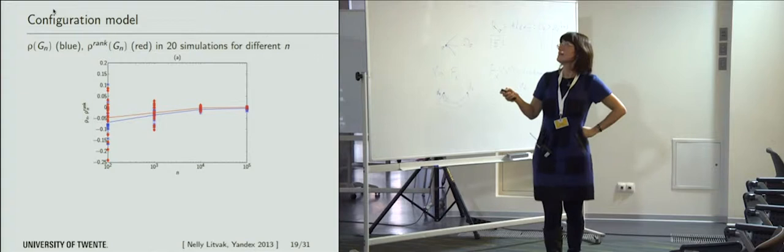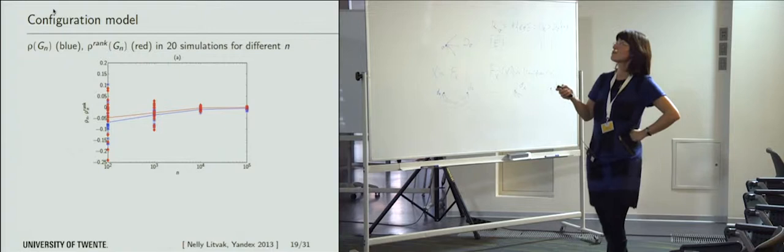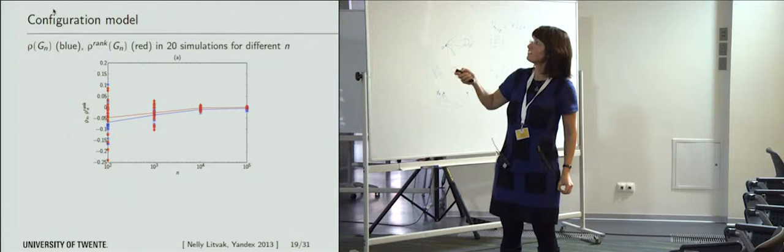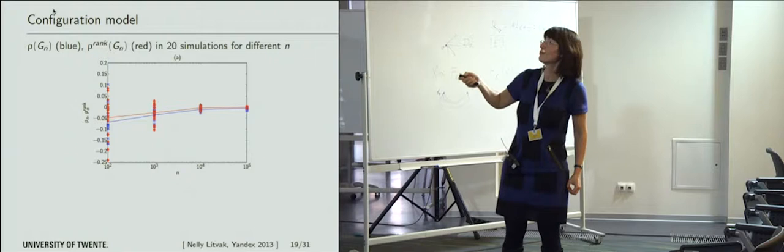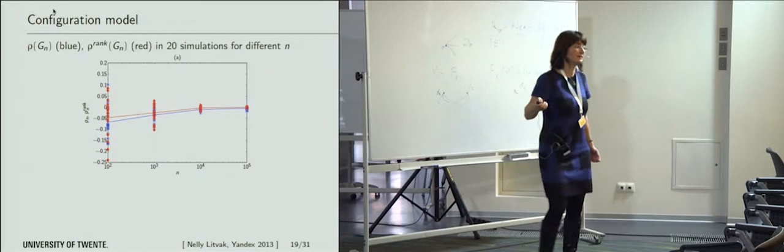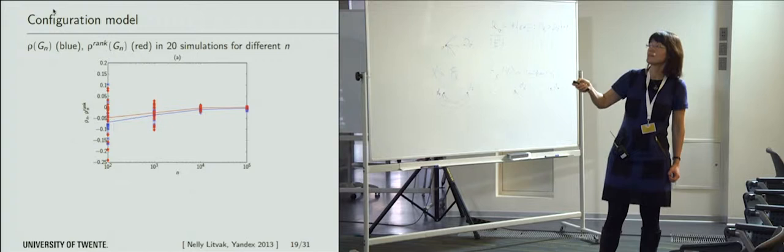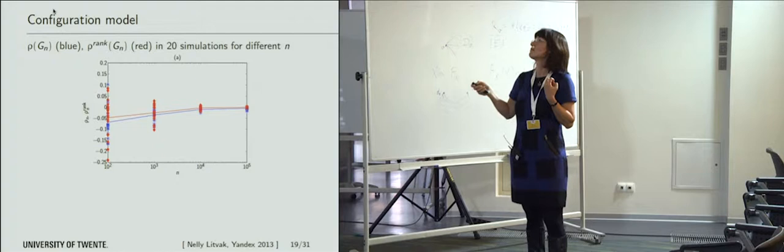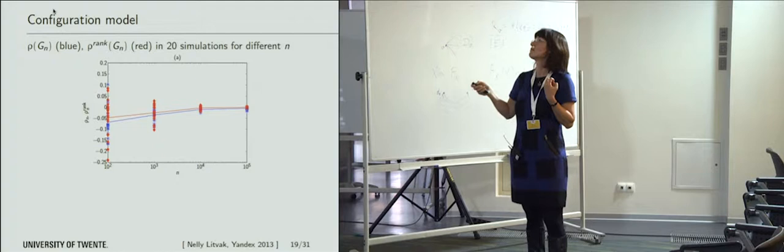These are scatter plots from simulations. I simulated 20 times each: a configuration network of 100 nodes, 1,000 nodes, 10,000 nodes, and 100,000 nodes. The blue dots are the Pearson assortativity coefficient, and the red dots are the rank correlations — blue are the bad guys, red are the good guys. Both go to zero, which is what you would expect. Red may go a little bit faster, but they both converge to zero, confirming our theorem.